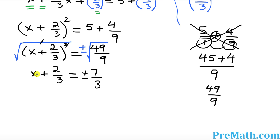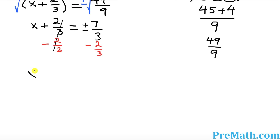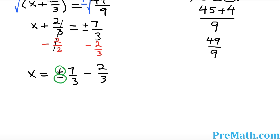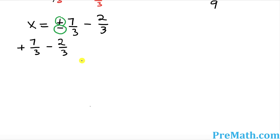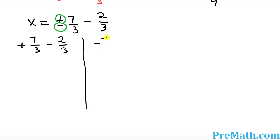Now isolate x by subtracting 2 over 3 from both sides. The 2 over 3 on the left cancels out, leaving x equal to plus or minus 7 over 3 minus 2 over 3. We then split the positive and negative cases: positive 7 over 3 minus 2 over 3, and negative 7 over 3 minus 2 over 3.